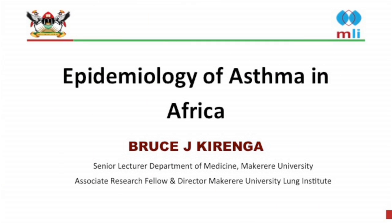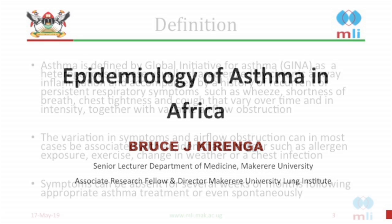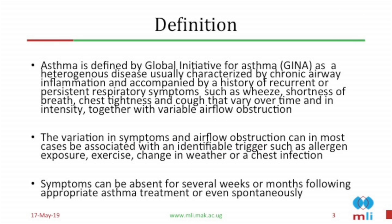So what is asthma? Asthma, like COPD, has also been very difficult to define, but an organization called GINA has come up with something which goes like this: it is a heterogeneous disease characterized by chronic airway inflammation and accompanied by a history of current and persistent symptoms, such as wheeze, shortness of breath, chest tightness, and cough, that vary over time and are associated with variable airflow obstruction.